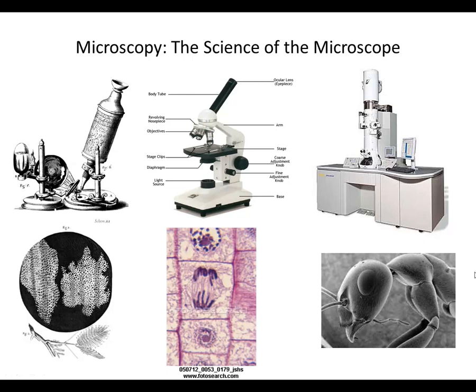Welcome DGS biology students, this is Mr. Gales, and tonight I'm going to be talking to you about the science of the microscope, or as we call it, microscopy. On this title slide you see three different types of microscopes. The microscope farthest to the left is a representation of a late 1600s microscope — an example used by a scientist named Robert Hooke. You can see the kind of detail that Hooke was able to observe, which is somewhat primitive by today's standards, but allowed us to see individual cells for the first time.